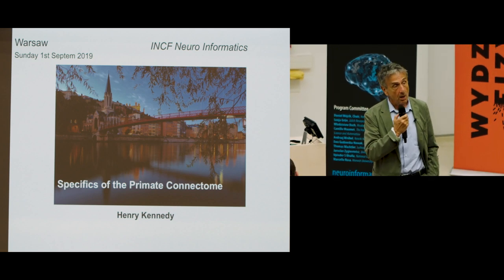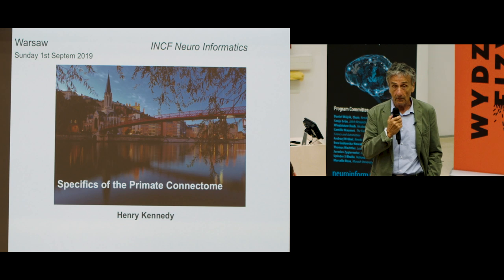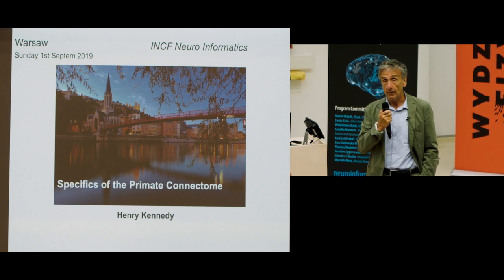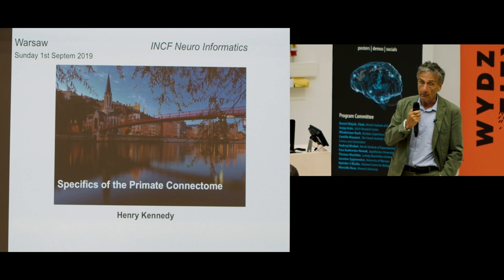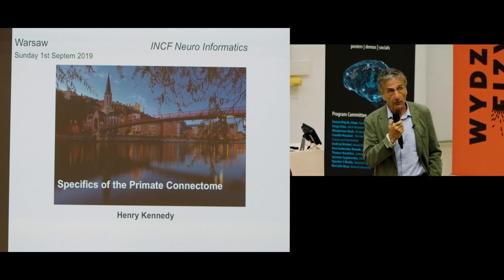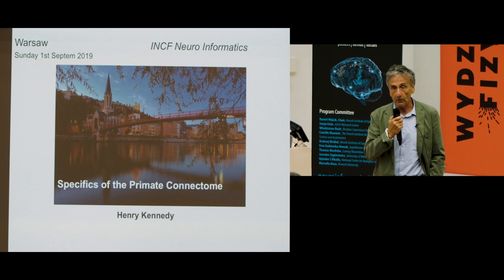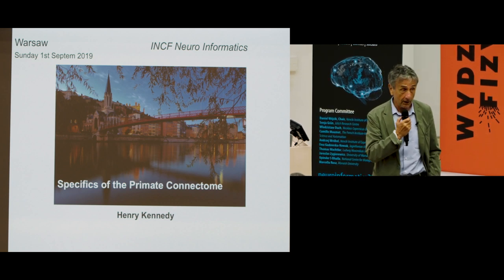It turns out that the macaque cortex has a density of 70%. Over two-thirds of the possible connections actually exist. So most areas connect to most other areas. If you want to understand the connectivity in functional terms, actually knowing what area is connected to what area is trivial — what you need to know is the strength of that connection.